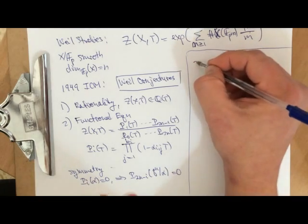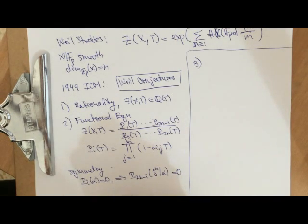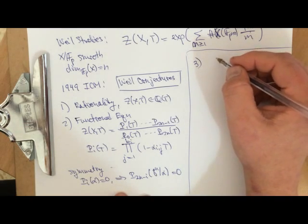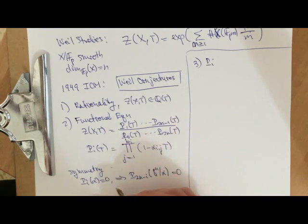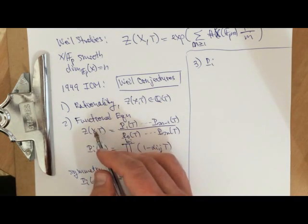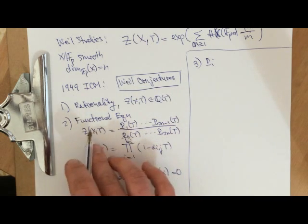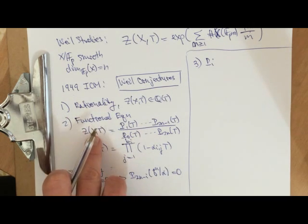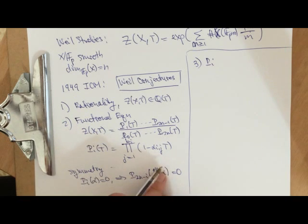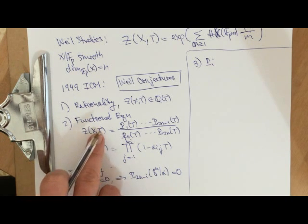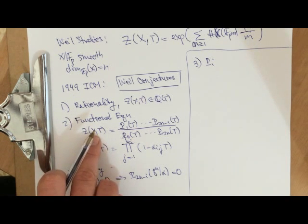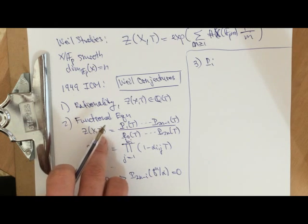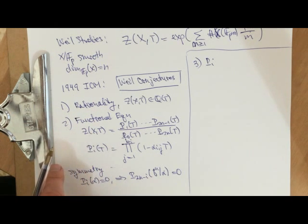There's a functional equation for the zeta function encoding all of these symmetries. You can write: ζ(X, T) = q^{2n} · ζ(X, q^n · (1/T)) · (1/q^{2n}), or something along those lines.